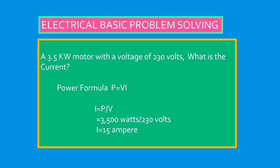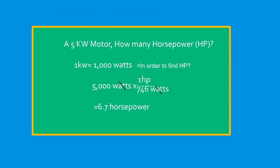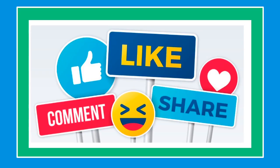This is the application of the formula we discussed previously. Example: A 3.5 kilowatt motor with a voltage of 230 volts, what is the current? Power formula: P = VI, so I = P/V. 3,500 watts (because we know 1 kilowatt is 1,000 watts) divided by 230 volts, so the answer is 15 amperes. Next question: A 5 kilowatt motor, how many horsepower? We know that 1 kilowatt equals 1,000 watts. In order to find horsepower: 5,000 divided by 746, the result is 6.7 horsepower. Thank you for watching and see you on the next video. If you like this video, please like, share, and subscribe. Have a good one.